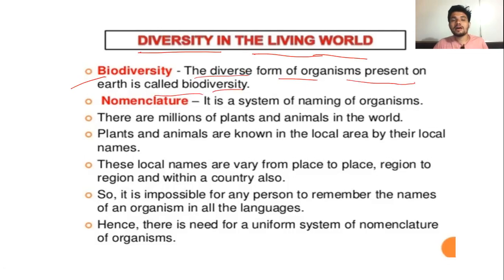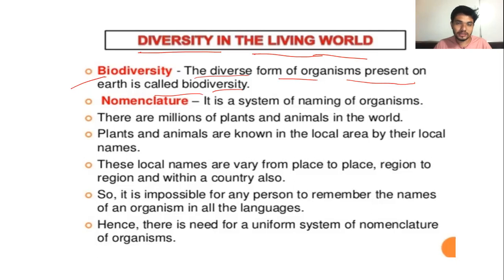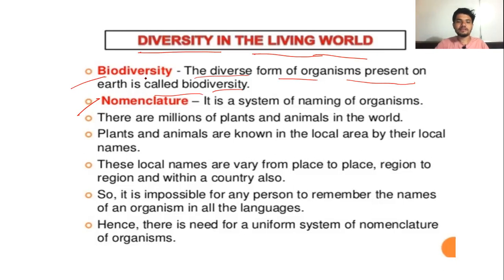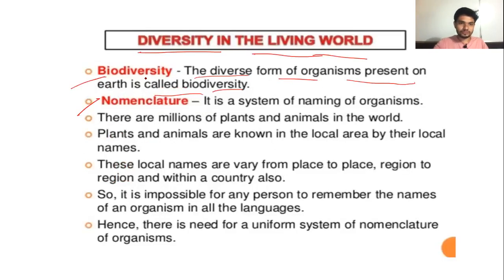So many organisms — as we have seen, 1.7 to 1.8 million species are present on this earth. This vast diversity and variety of organisms is known as biodiversity. In the last lecture we also studied binomial nomenclature as given by Carlos Linnaeus. So what is nomenclature? It is the systematic naming of organisms.